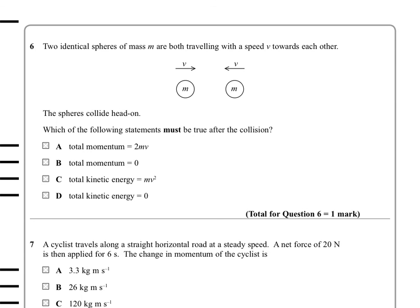Question 6. Two identical spheres of mass M are both traveling with a speed V towards each other. The spheres collide head on. Which of the following statements must be true after the collision? Must be true. Must has been emphasized for us, so we need to think about not things that can be true, but things that must be true.